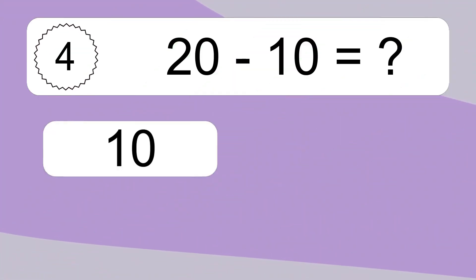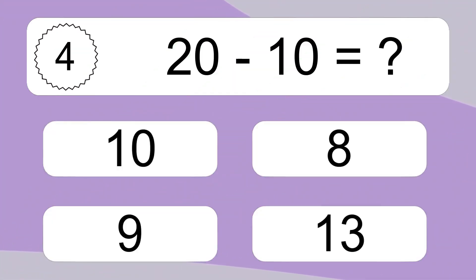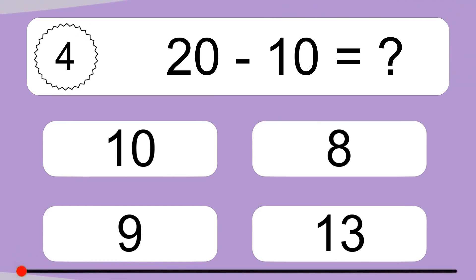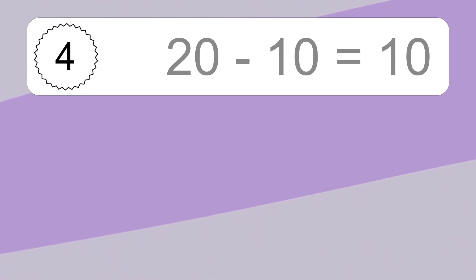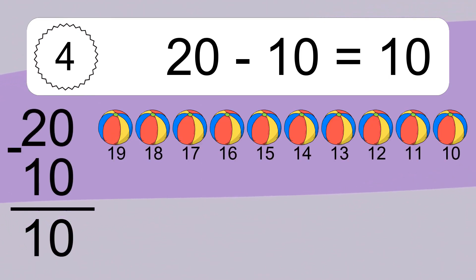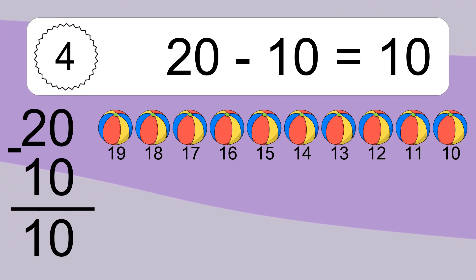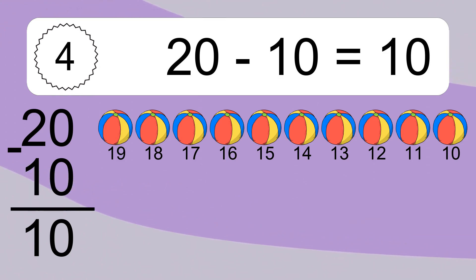20 minus 10 equals what? 20 minus 10 equals 10. Let's count it: 19, 18, 17, 16, 15, 14, 13, 12, 11, 10.